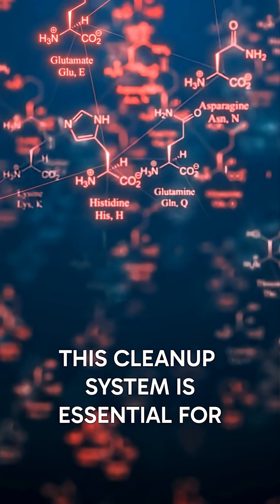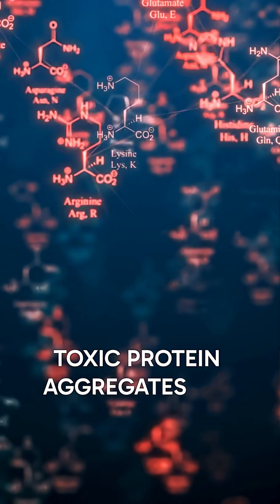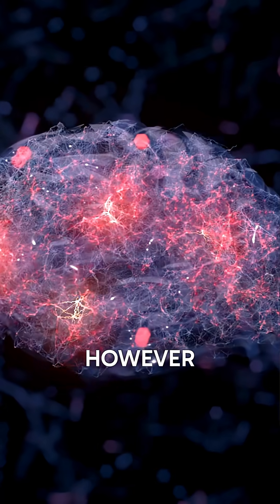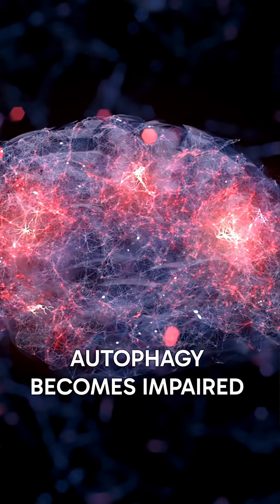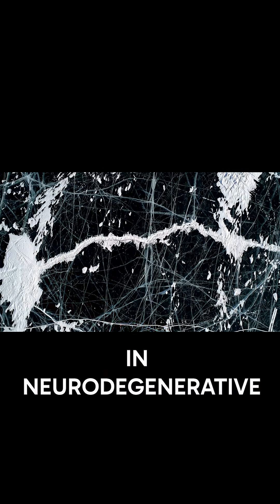In the brain, this cleanup system is essential for removing toxic protein aggregates like amyloid and tau. However, autophagy becomes impaired with aging and in neurodegenerative diseases.